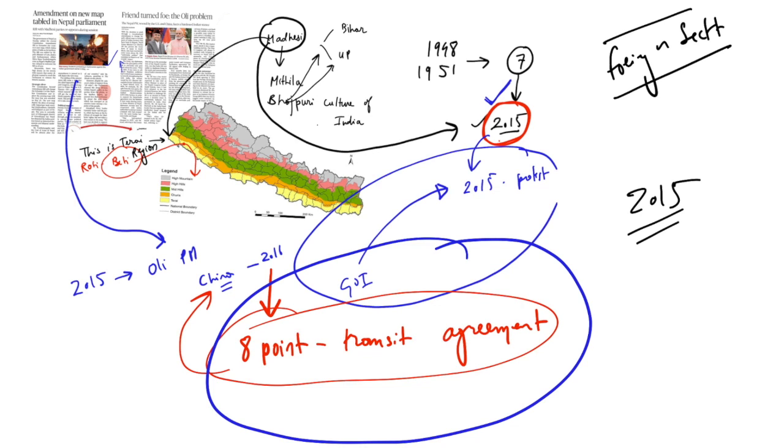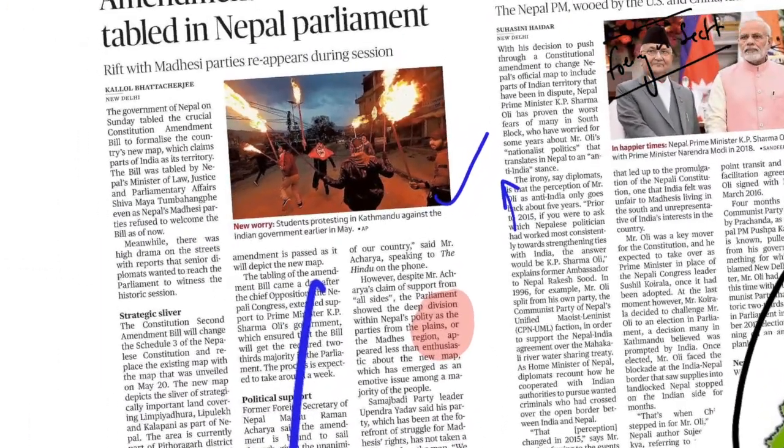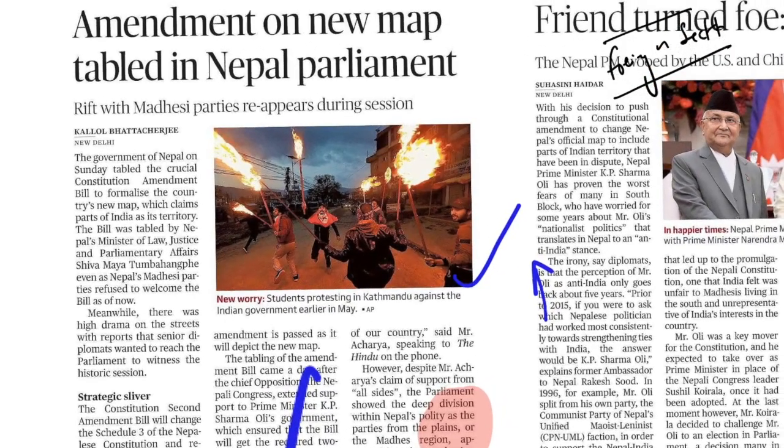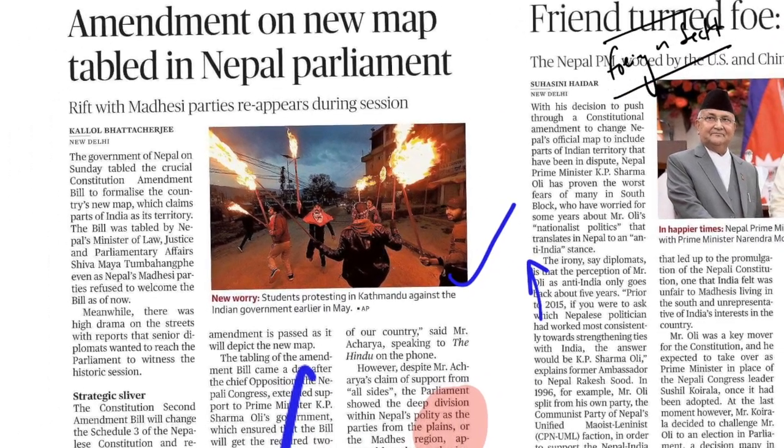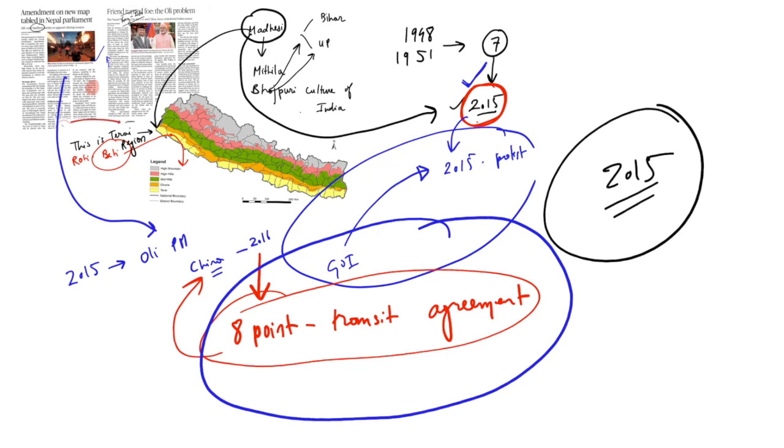Though the event right now reignited by the Kailash Mansarovar Road, the story began well in 2015 with the Madhesi crisis. As we see right now today also when the amendment bill is being laid, the Madhesis are not happy. Why Madhesis are not happy? Because still, Madhesis believe that their concerns have not been completely addressed till today and the government is only going into populistic and nationalistic policies such as grabbing the land and all these kind of things.